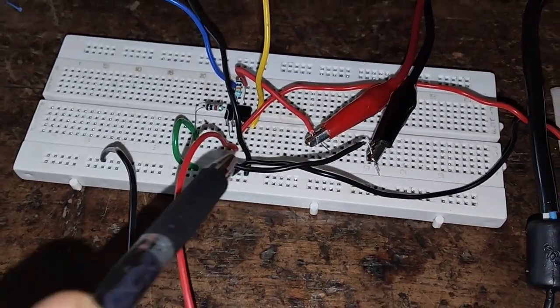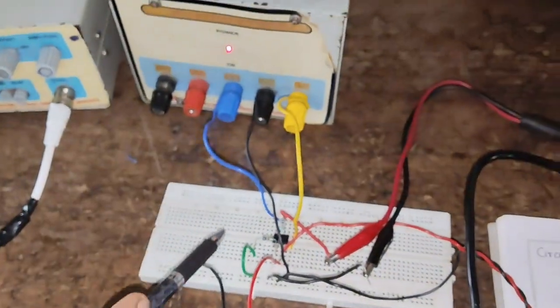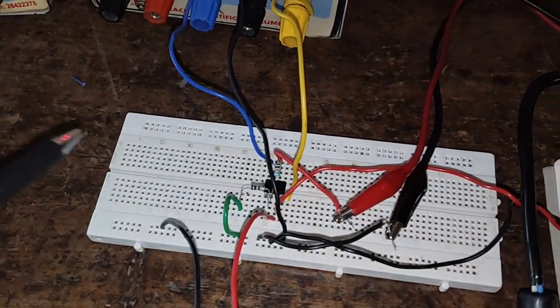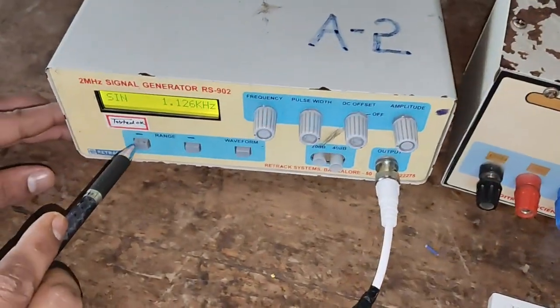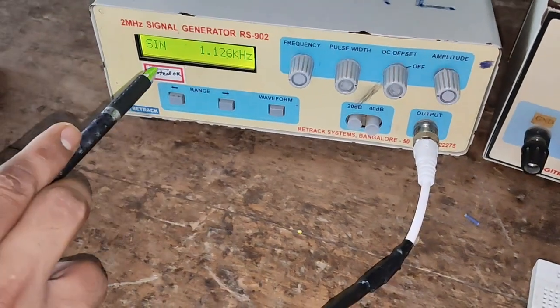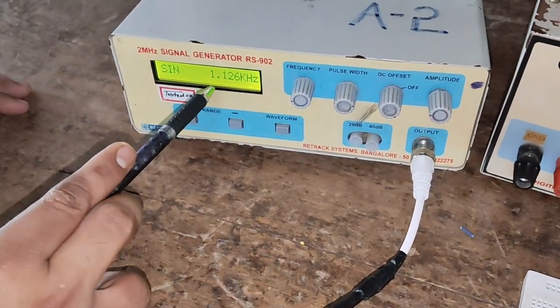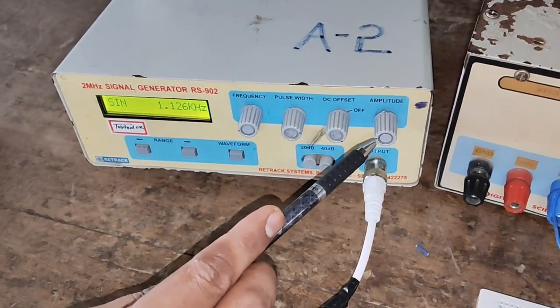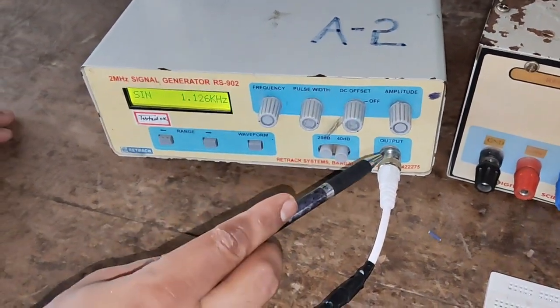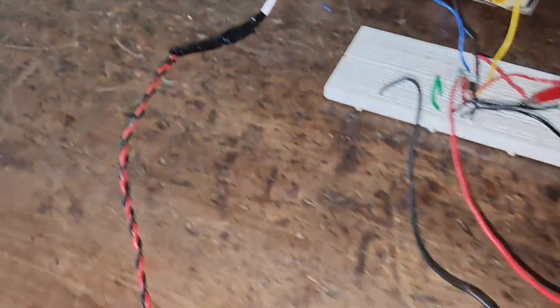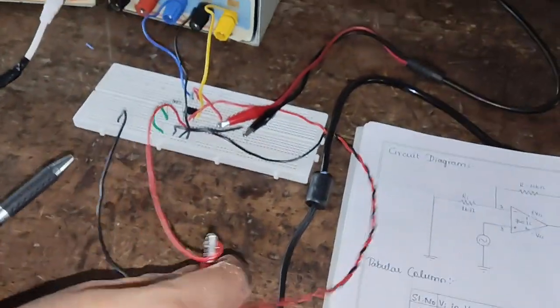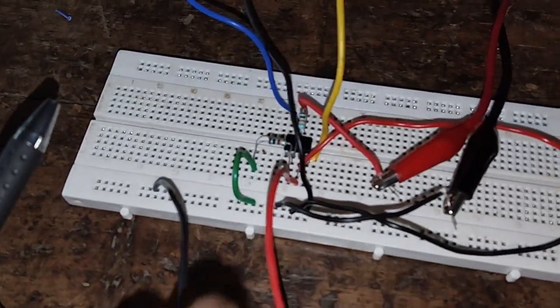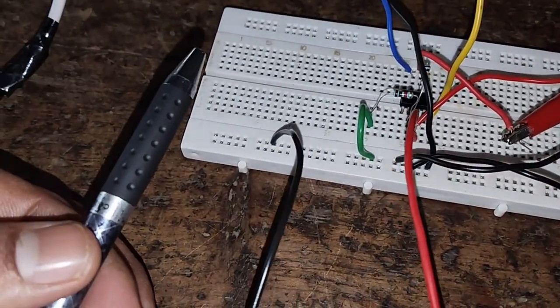Now, we will apply the input signal to pin number 3 through resistor R1. This is a function generator. We have set the signal as a sine wave with frequency of 1.1 kilohertz and amplitude of 1 volt. I will connect this through a BNC connector. The positive is connected to pin number 3 and negative to ground.